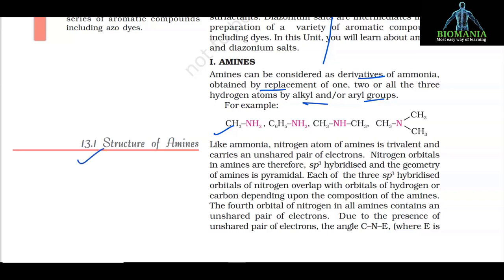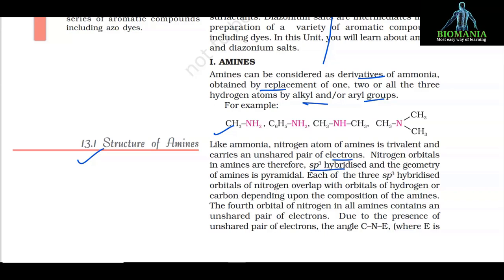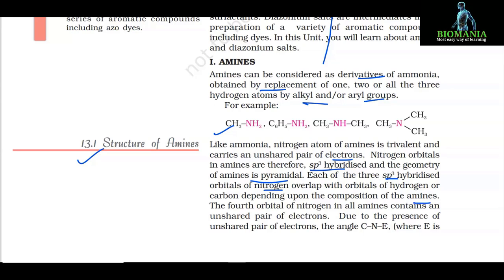13.1 Structure of Amines. Like ammonia, the nitrogen atom of amines is trivalent and carries an unshared pair of electrons. Nitrogen orbitals in amines are therefore sp3 hybridized and the geometry of amines is pyramidal. Each of the three sp3 hybridized orbitals of nitrogen overlap with orbitals of hydrogen or carbon depending upon the composition of the amine. The fourth orbital of nitrogen in all amines contains an unshared pair of electrons.